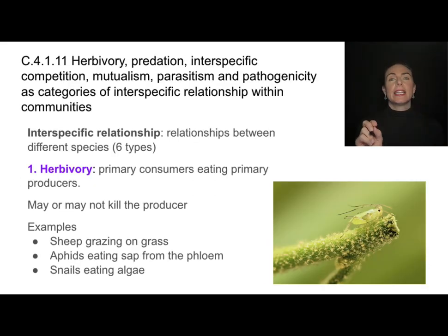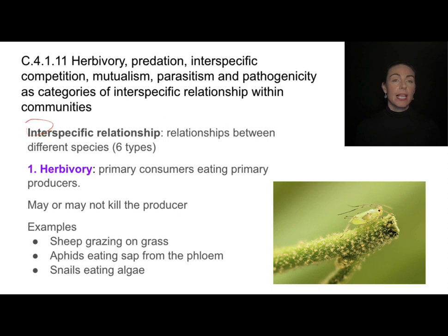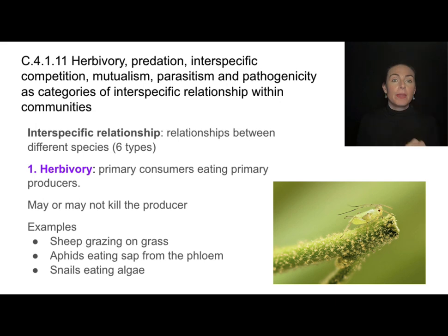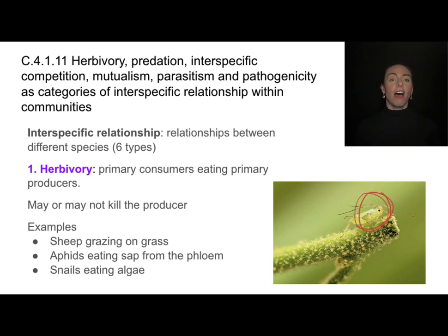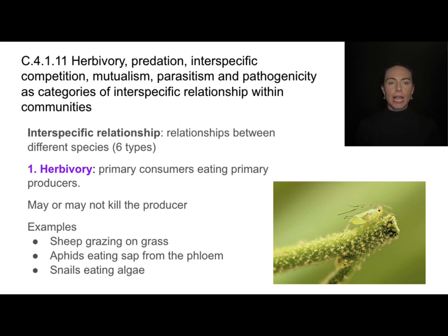That is very different from interspecific relationships. Inter means between, so these are relationships between species that are not the same — between populations of different species. There are six types. The first is herbivory: when primary consumers, like this aphid, eat primary producers, like this plant. It may or may not result in that producer being killed — for example, sheep grazing on grass, or snails eating algae.